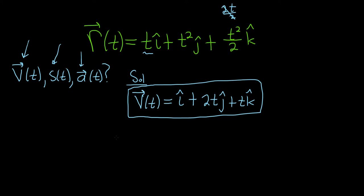To find the speed, recall that speed is the magnitude of velocity. The magnitude formula says you take the square root and square each component. So here there's a 1, so it'll be 1 squared, plus 2t squared, plus t squared.